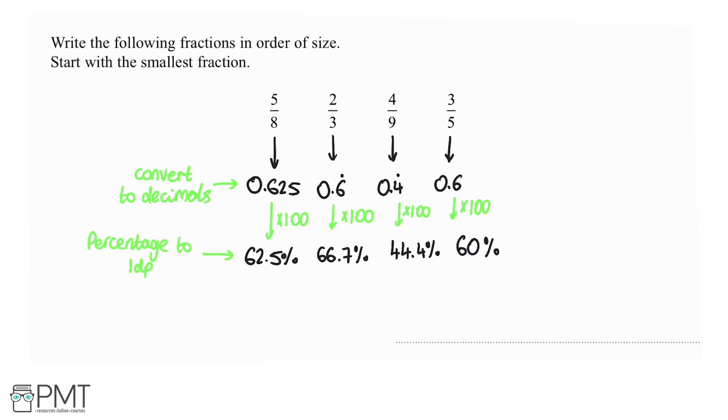And now we should be able to order them much more easily. So we can see the smallest one is 44.4, and then the next one up is this one, 60%, then this one 62, last one is 66.7.